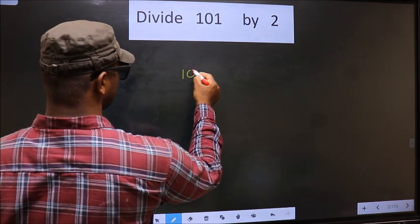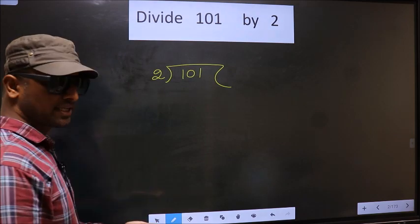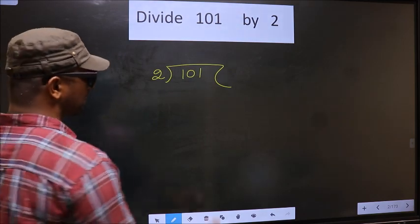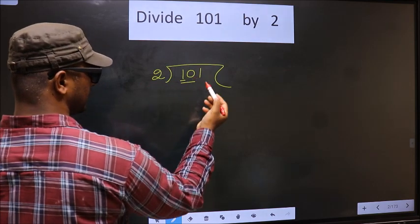See, that is, 101 divided by 2. Okay, next. Now here we have 1 smaller than 2. So we take 2 numbers, that is 10.